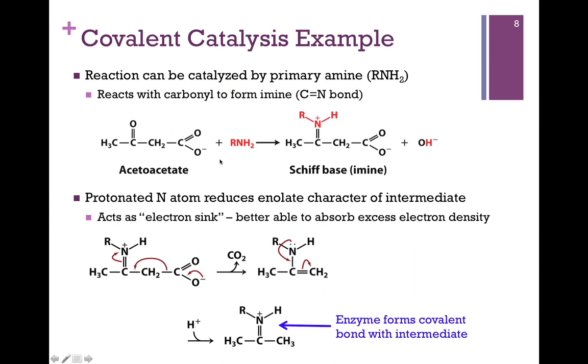So let's see how we might use covalent catalysis to stabilize this intermediate. Here's our substrate acetoacetate. We have our primary amine that's going to play the part of our covalent catalyst. Remember, this is an amine group side chain on our enzyme. We have a nucleophile in the electron-rich nitrogen atom, and it will attack the carbonyl carbon atom that carries a positive charge, a partial positive dipole. In the process, we form this imine. Remember, that's a carbon-nitrogen double bond that's referred to as a Schiff base, and we've released hydroxyl ion.